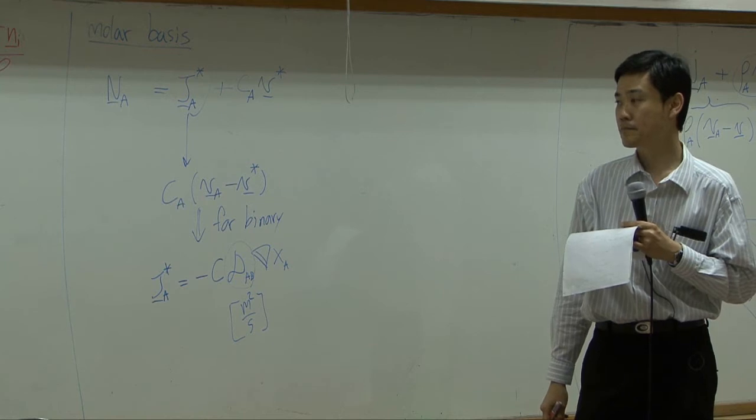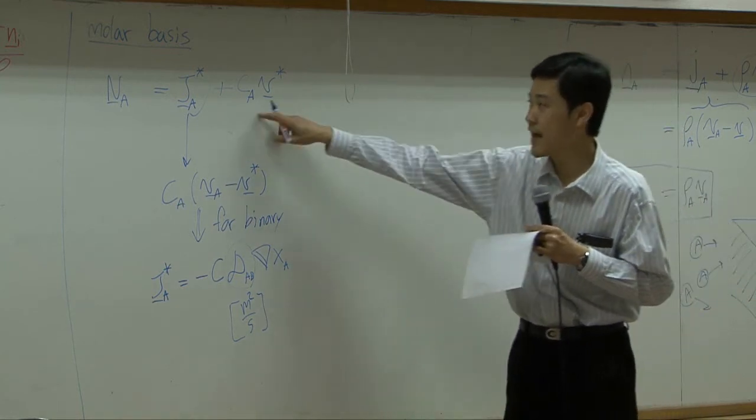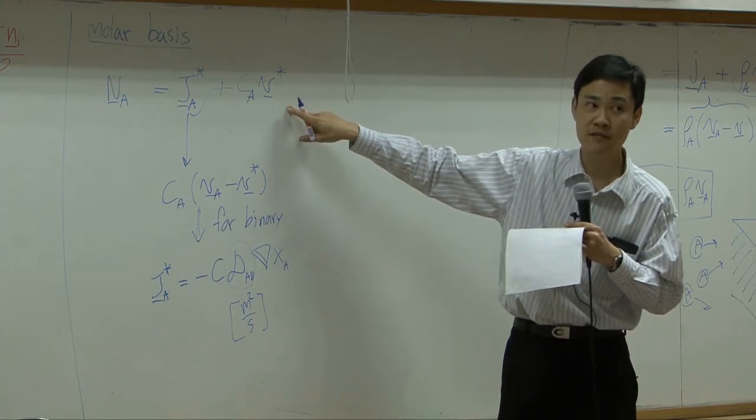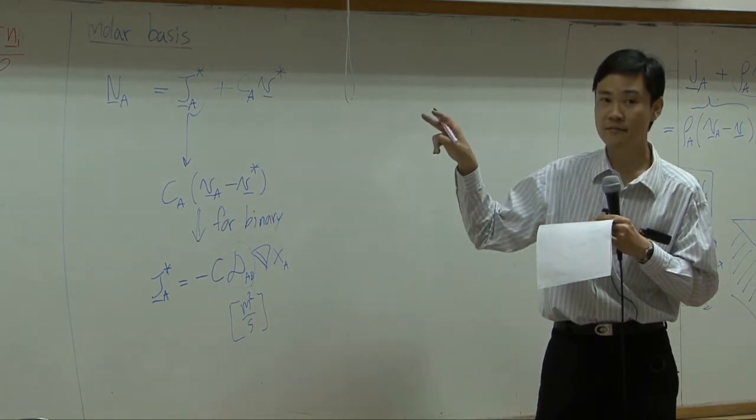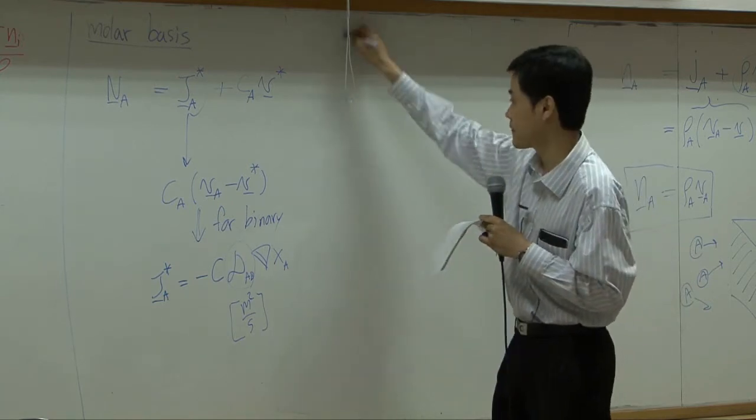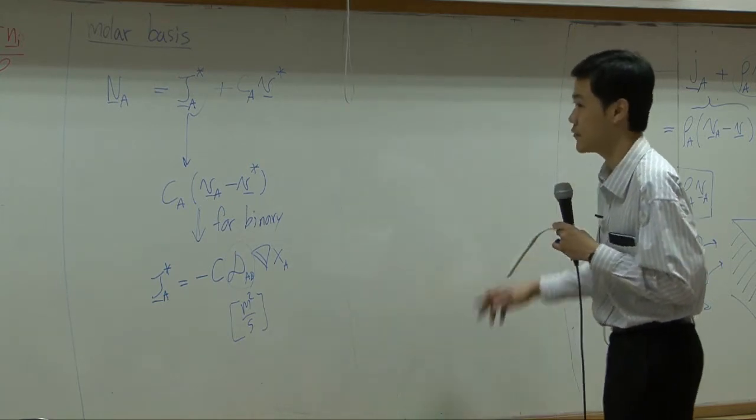All right, so CAV star is, I'm sorry, is convective flux for A in mole basis. So you have three terms as well.